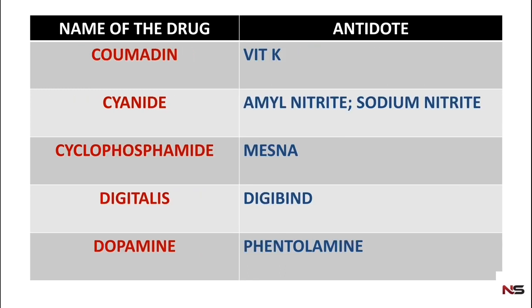For coumadin (warfarin) poisoning, the antidote used is vitamin K. For cyanide poisoning — which is very important, and whose antidote mechanism of action is very important in both objective and subjective type exams — the antidotes used are amyl nitrite and sodium nitrite. For cyclophosphamide, mesna is used.